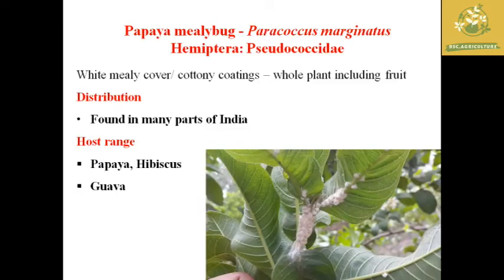The first major pest in papaya is the Papaya Mealy Bug, where the scientific name is Paracoccus marginatus, belonging to the family Pseudococcidae and order Hemiptera. In papaya, we can see a white mealy cover or white mealy coating present on the whole plant including the stem as well as on the fruit.